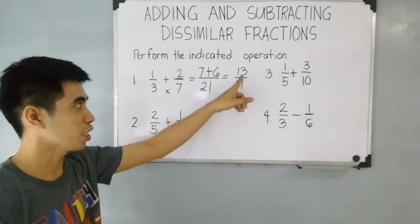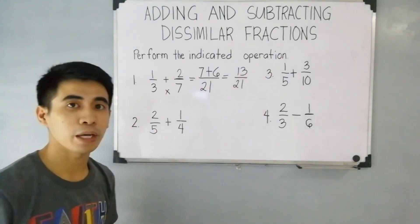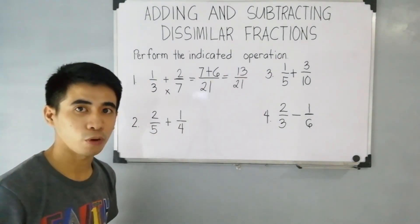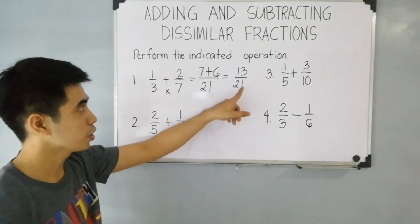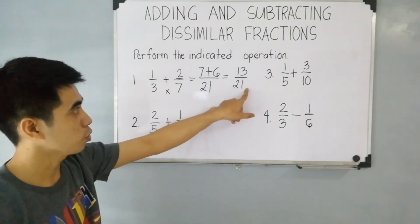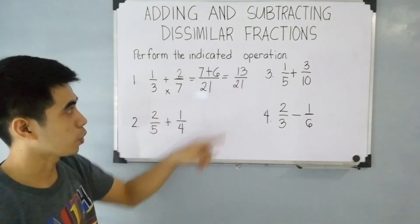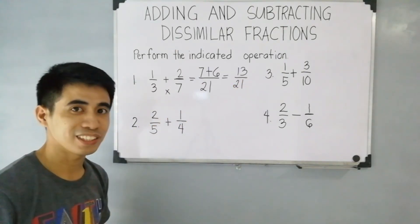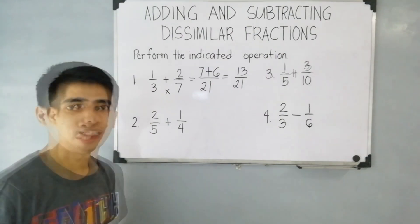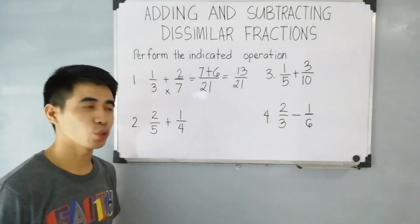We all know 13 is a prime number. Therefore, 13 over 21 is the final answer.